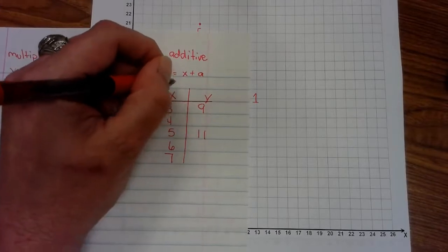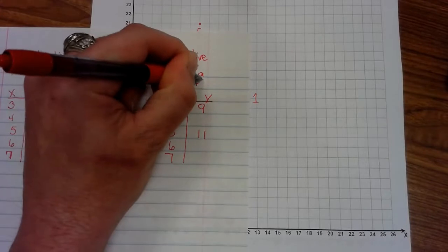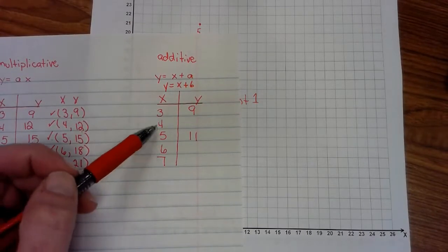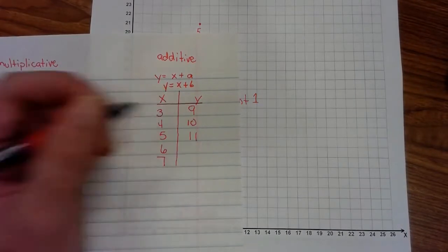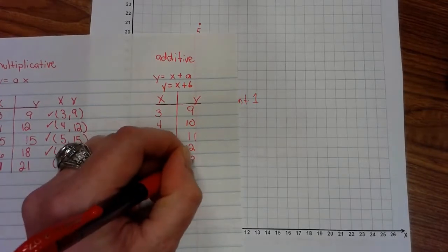So this in reality is y equals x plus 6. So now I come to all the numbers in the x and I add 6 to them. 6 plus 4 is 10. 6 plus 6 is 12. 7 plus 6 is 13.